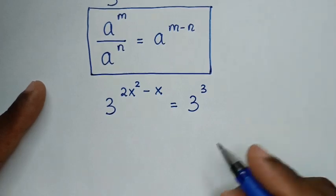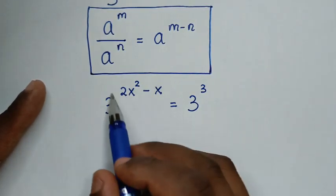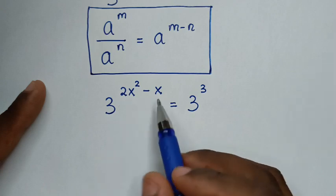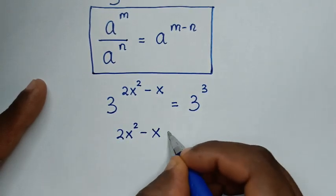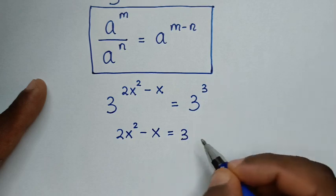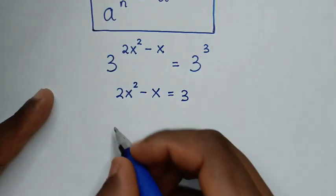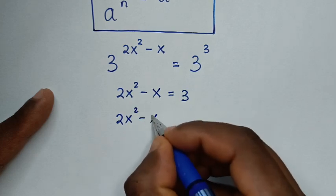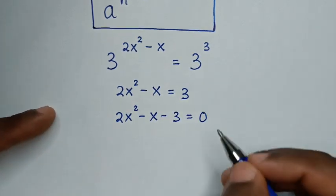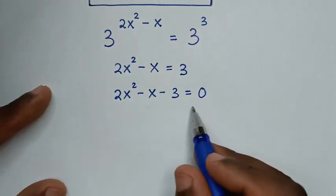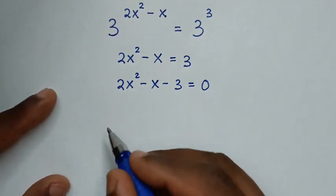Since we have the same base on both sides, we compare the exponents. So 2x squared minus x equals 3. Moving 3 to the left side gives us 2x squared minus x minus 3 equals 0.